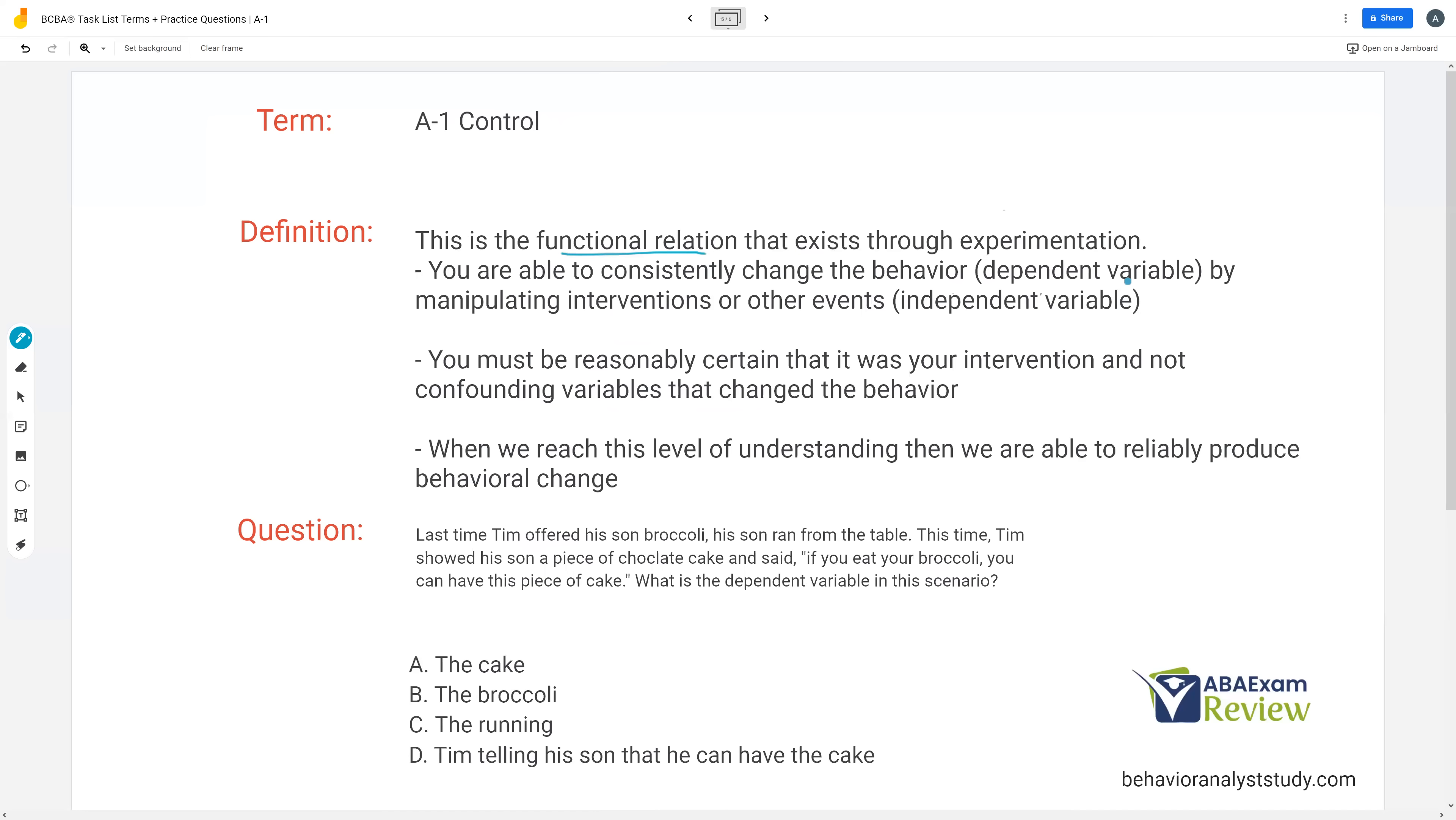Because if we want to create reliable behavior change, we have to be able to demonstrate control. If we don't have control, we can't reliably change that behavior. And you've got to be reasonably certain it was your intervention and not any confounding variables that changed the behavior. Again, the reason we have correlations and not causations is because there are too many things in the environment we can't control.